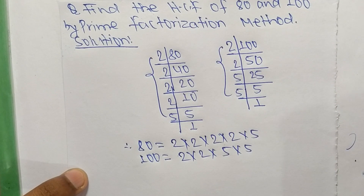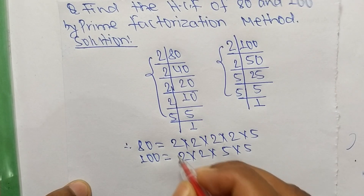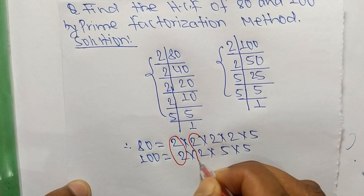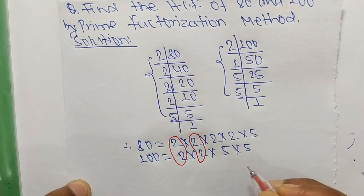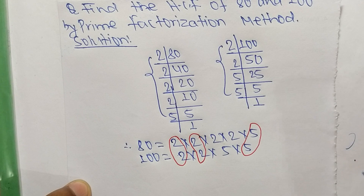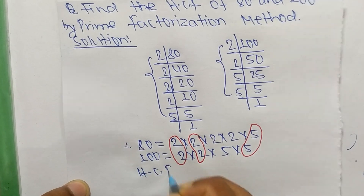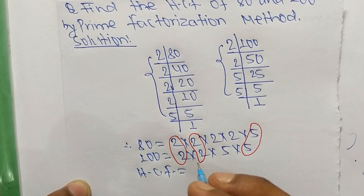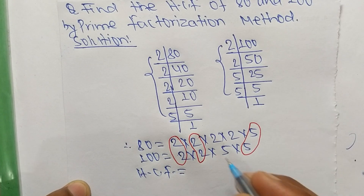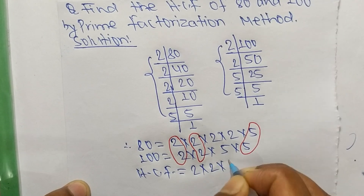Now we select the common factors from these prime factors. The common ones are 2, another 2, and 5. So the HCF is equal to the product of these common factors: 2, 2, and 5.